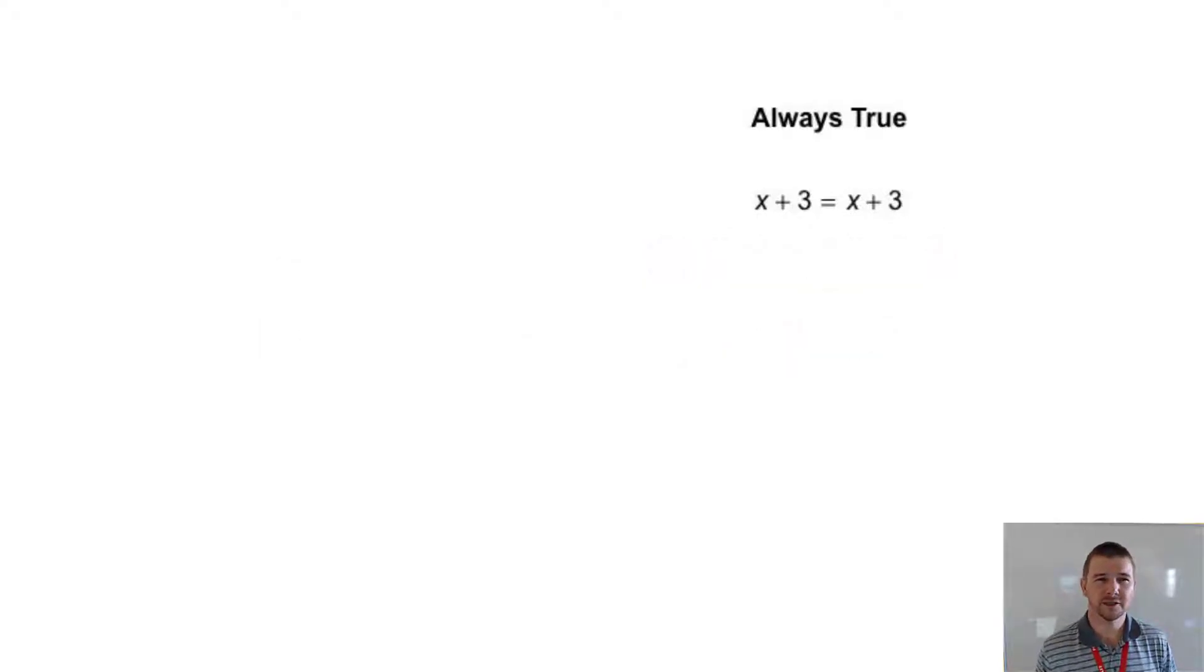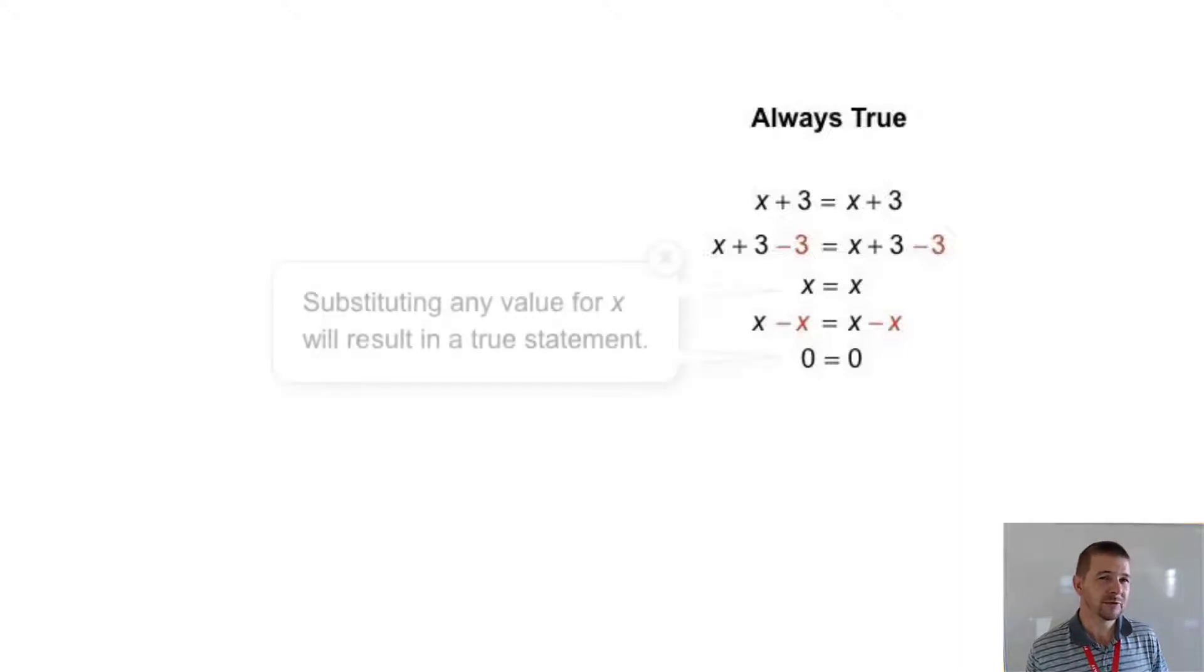Always true, we'll consider the equation x plus 3 equals x plus 3. As we work to solve, we can subtract 3 from each side and we find that x equals x. Then we can go another step and subtract x from each side and find that 0 equals 0. This means that no matter what value we substitute for x, the equation is always true.